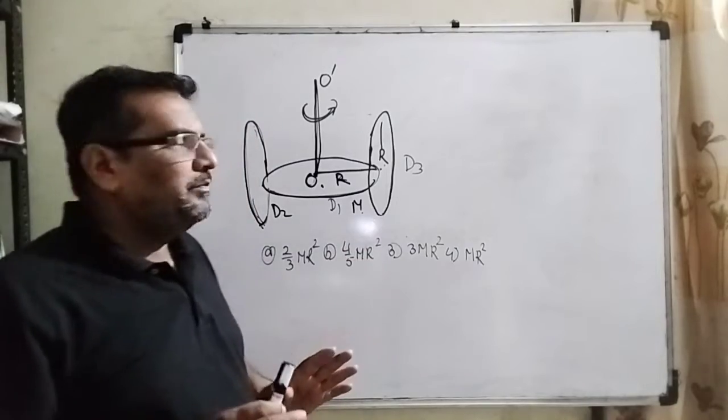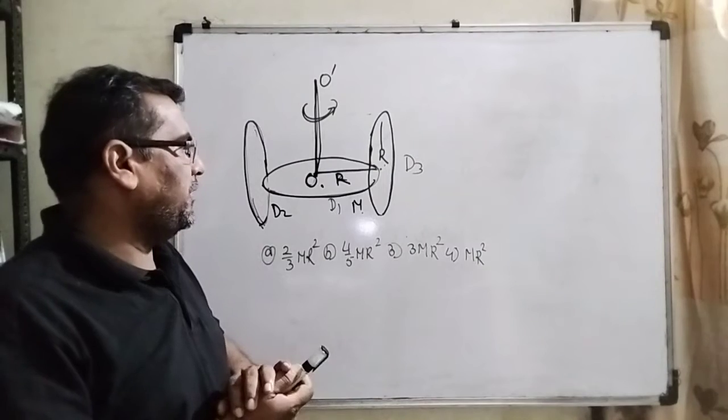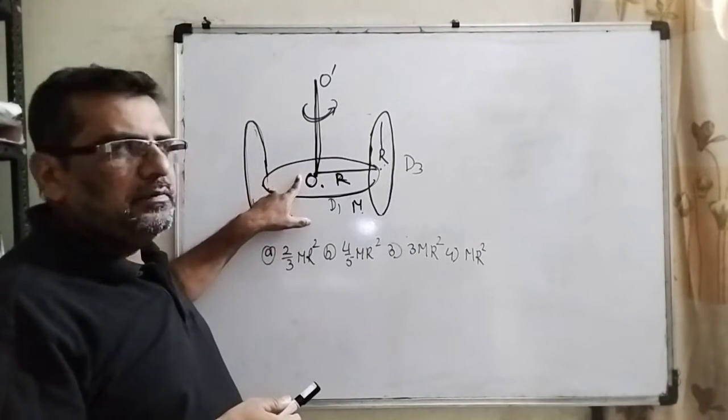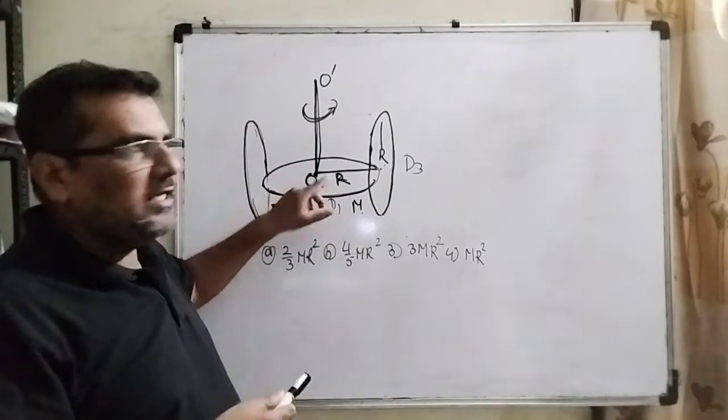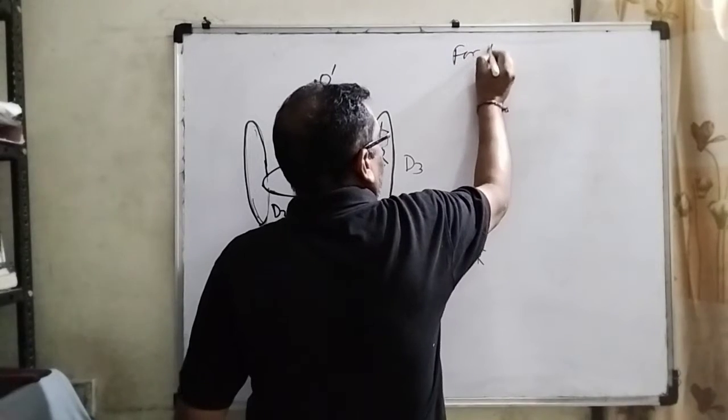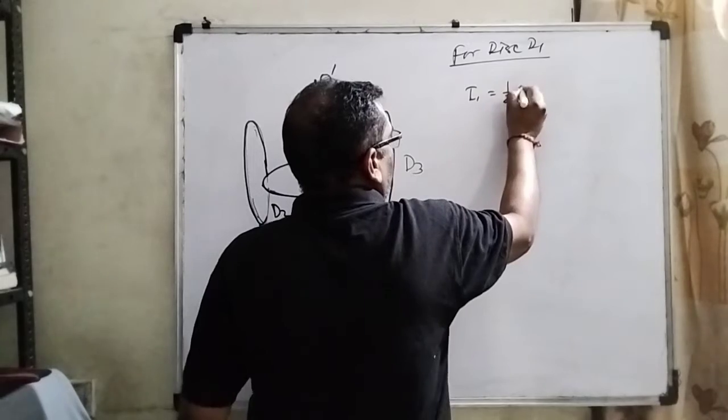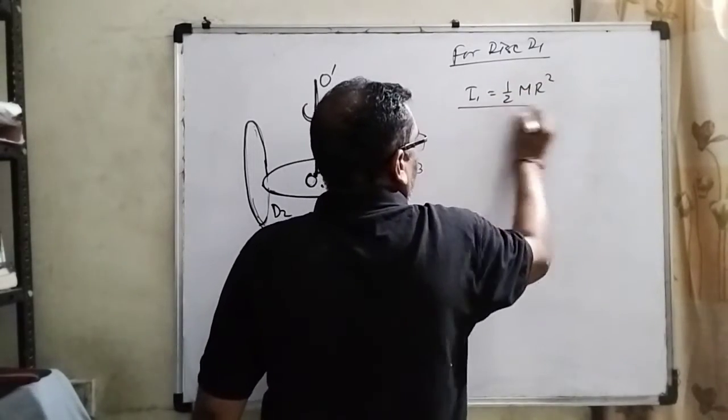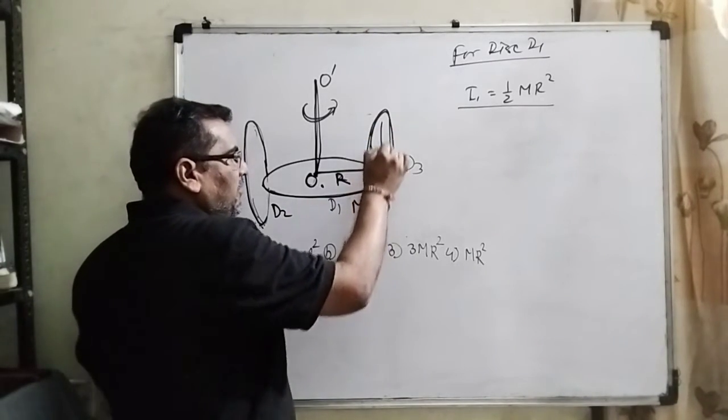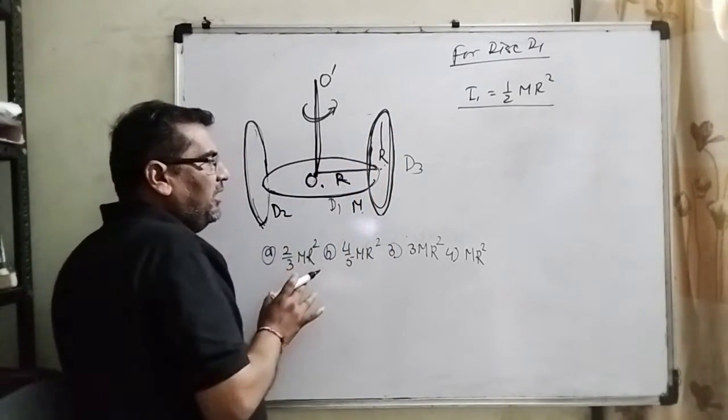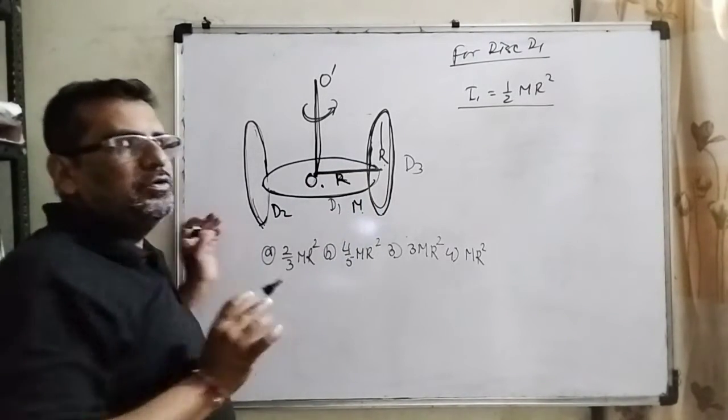As I have always been saying before solving the question, first we have to set the central idea how to solve this question. First things, for the D1, as we are well known, the center of mass of this disk is at the center, 1/2 MR². Okay. There is no any problem. But for the second condition, you can see we have to find out the center of mass of this disk along the diameter.